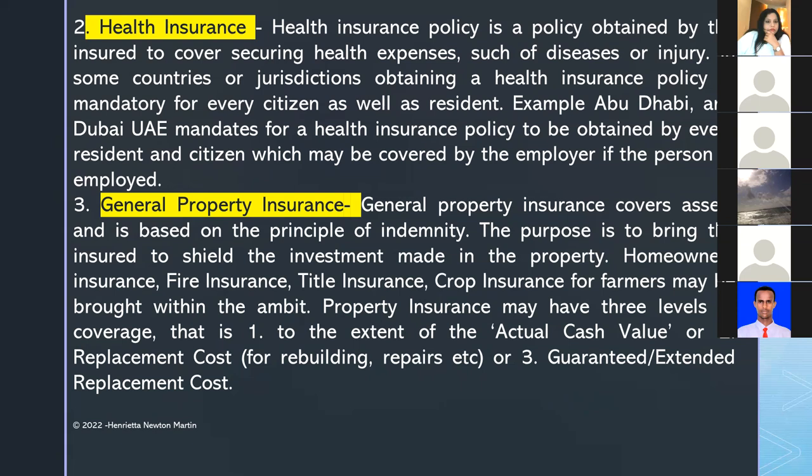General property insurance covers assets and is based on the principle of indemnity — to make good or cover a loss. The purpose is to shield the investment made in property. Examples include homeowner's insurance, home insurance, fire insurance, title insurance, and crop insurance for farmers.